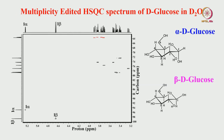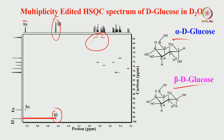We also discussed alpha and beta glucose — a mixture of two glucose isomers. In D-glucose, we have the alpha isomer and beta isomer in a ratio of approximately 36:64. In the multiplicity-edited spectrum, the CH2 carbons appear as red (negative), and the rest are CHs. We can easily identify them. The anomeric protons are the key starting points for analysis of the COSY spectrum also.